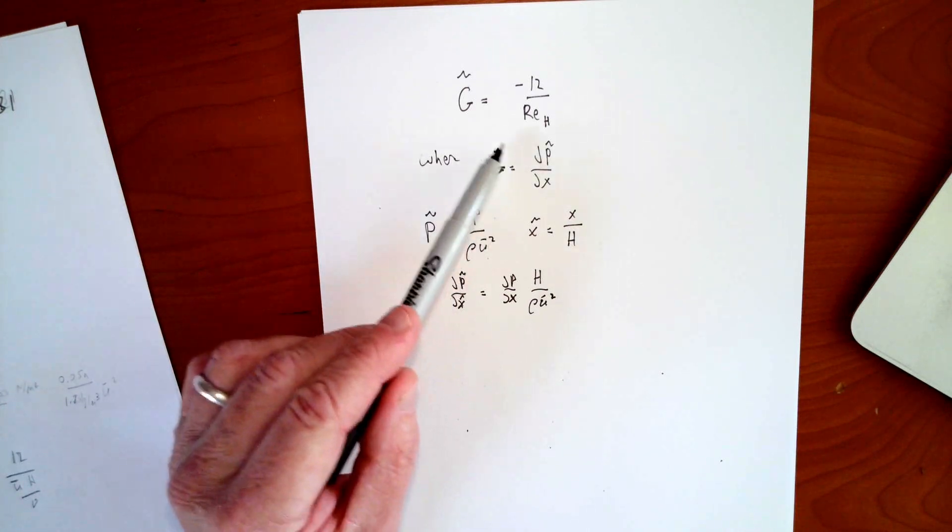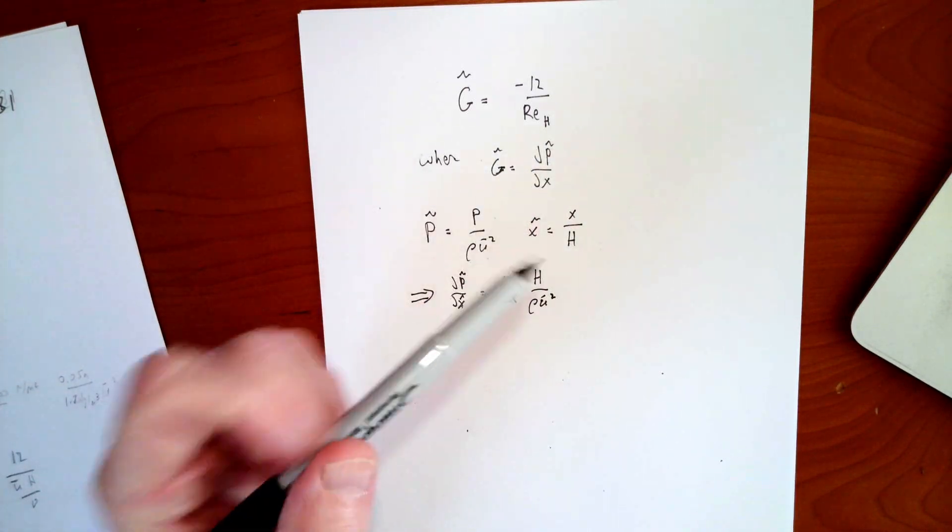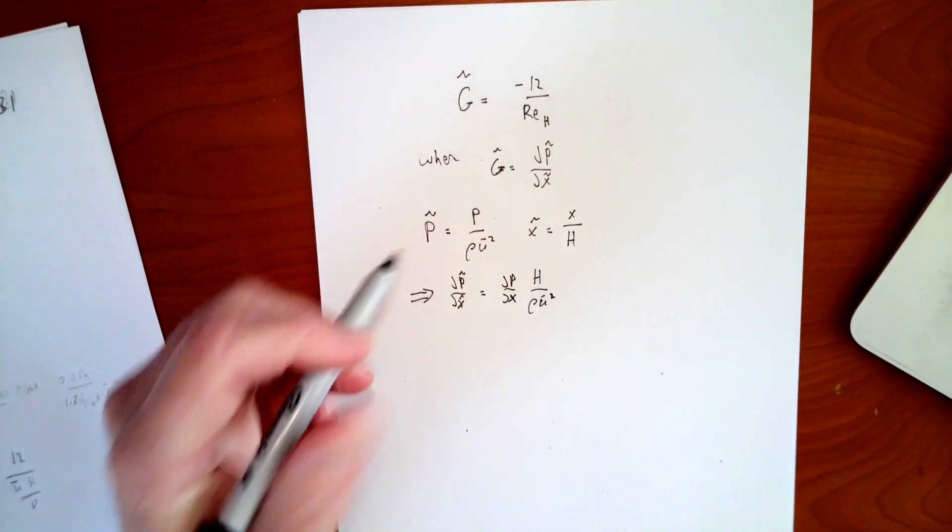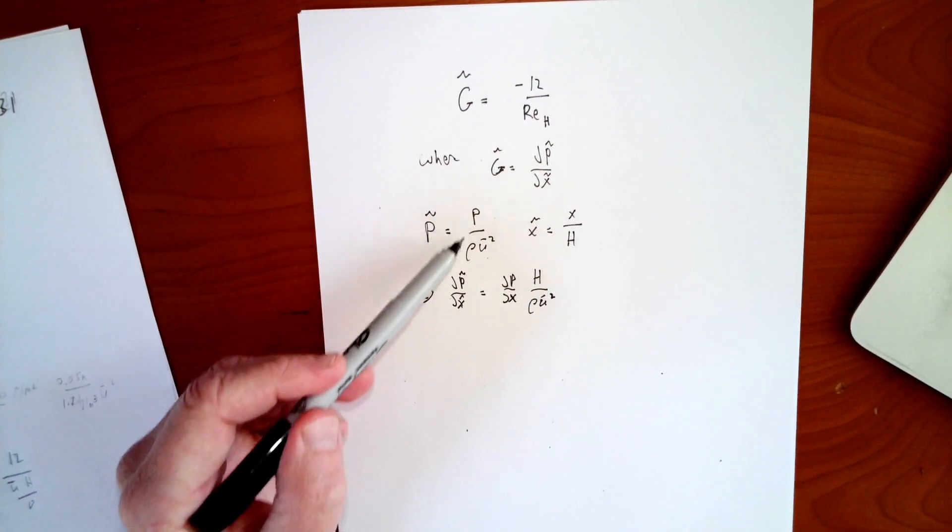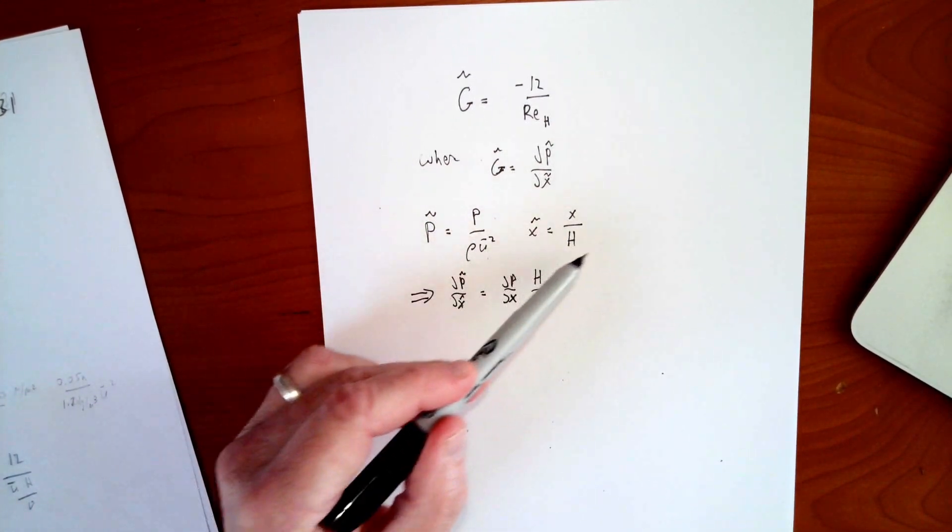We know that the dimensionless pressure gradient, of course, is the dimensionless pressure gradient. So that's dp dx with everything dimensionless. But p is dimensionless p and this is dimensionless x.